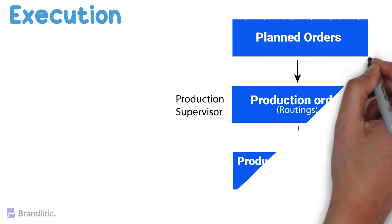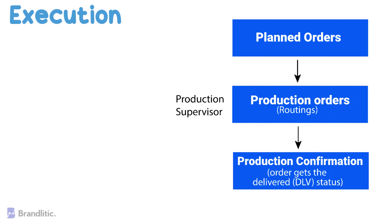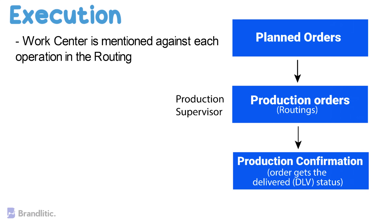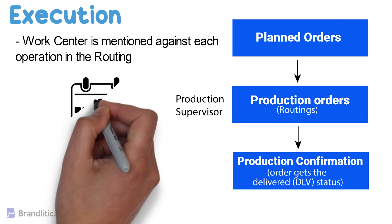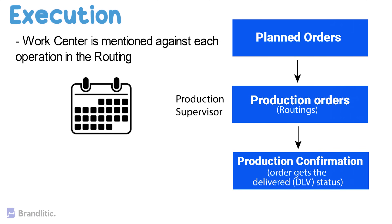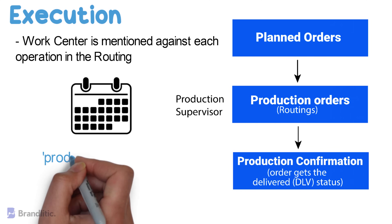Second is Execution. The planned orders are converted to production orders and are scheduled as per the production timings using master data such as routing. Production orders are released by the production supervisor, and material availability checks can also be carried out to check if there is any missing component. Production is carried out based on the activities maintained in routing, where the master data like work center is mentioned against each operation. Once the production is complete, confirmation of orders is executed, and goods movement for material consumption and goods receipt are posted against the order. The order then gets a delivered or DLV status, and material is received into the desired storage location. At month end, before doing order settlement, production orders need to be set to technically completed status in order to calculate production variances by controlling personnel.